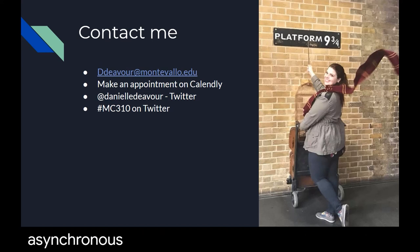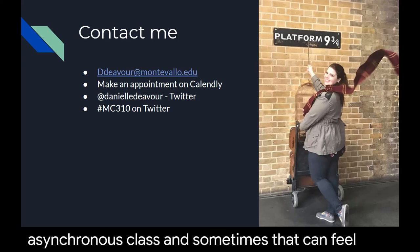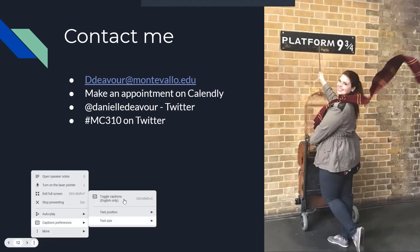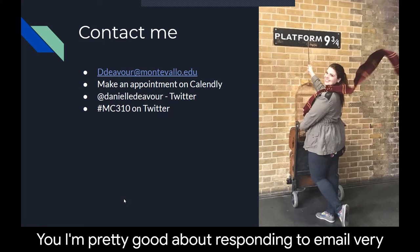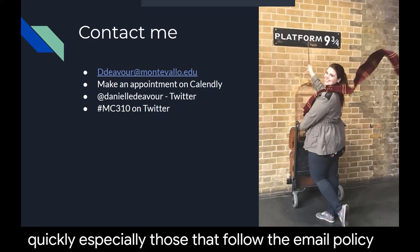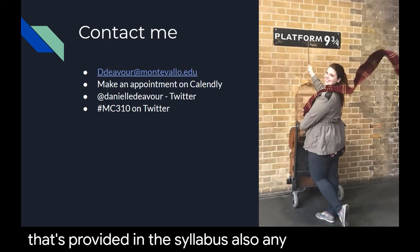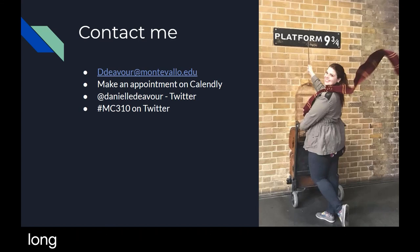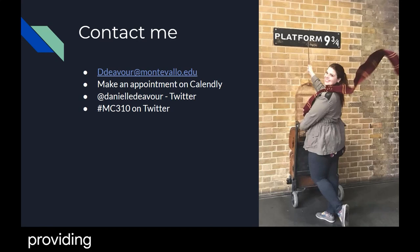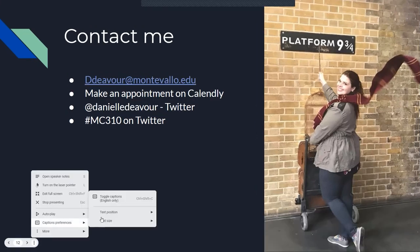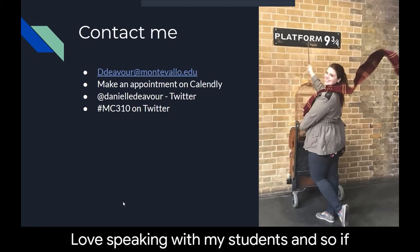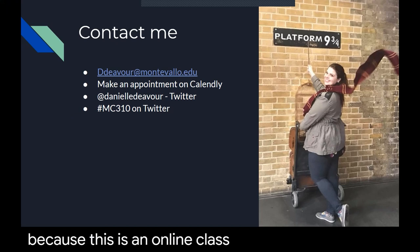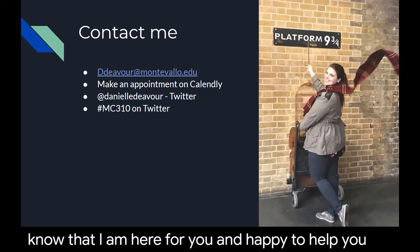I know that this is an online asynchronous class, and sometimes that can feel like your professor is not there for you. I want to promise you that I am here for you. I'm pretty good about responding to email very quickly, especially emails that follow the email policy in the syllabus. Anytime you need to make an appointment — whether in person or on Zoom — you can do so through Calendly, and that link is in your semester long resources folder. You can also contact me on Twitter, and you may want to follow hashtag MC310 on Twitter because I will be retweeting examples of things we are learning. Please know that I really love speaking with my students, so don't hesitate to reach out.